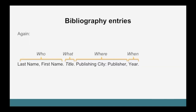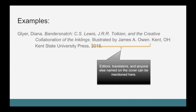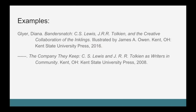Again, bibliography entries give the same basic information to readers, answering the questions of who, what, where, and when about a source. For example, we might have the book Bandersnatch by Dr. Diana Glyer. In the bibliography it would be organized by the author's last name, comma, first name, followed by the full title of the publication, the name of the illustrator — in this case James A. Owen — and this is also the place where you put any names of editors, translators, or anyone else named on the cover, followed by the city of publication, the name of the publisher, and the year of publication. If we were to cite a second book by Diana Glyer, we would replace her name in the second entry with six hyphens and then provide the rest of the standard bibliography format.